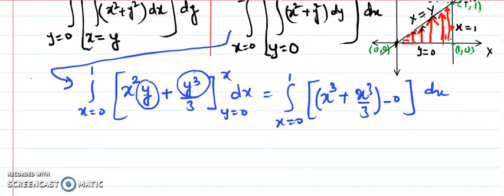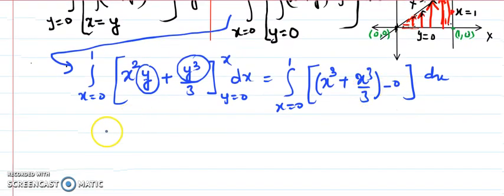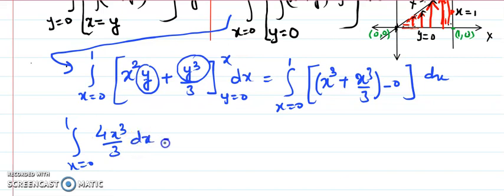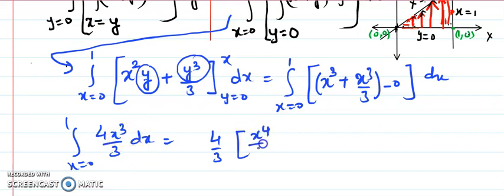So we have 4 over 3 times the integral of x cubed with respect to x, evaluated from 0 to 1. Since 4 over 3 is constant, the integration of x cubed gives x to the fourth over 4, and the 4s cancel.